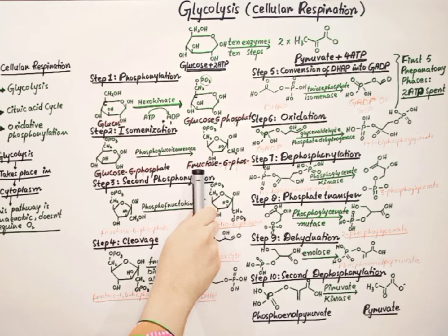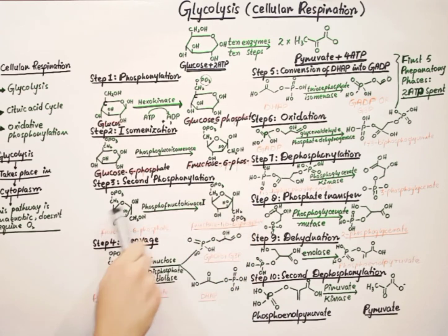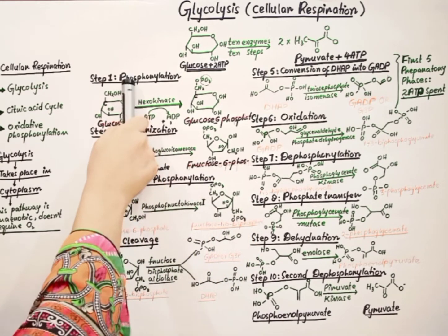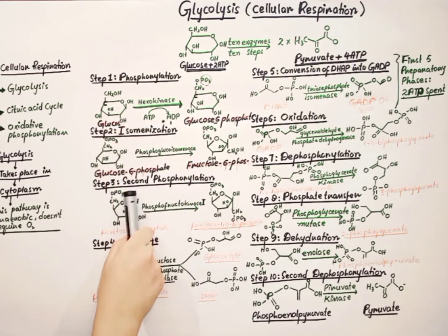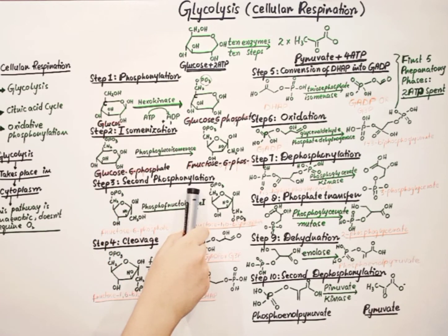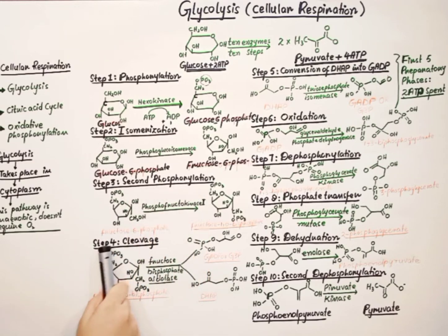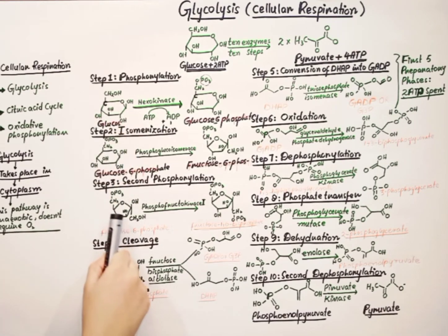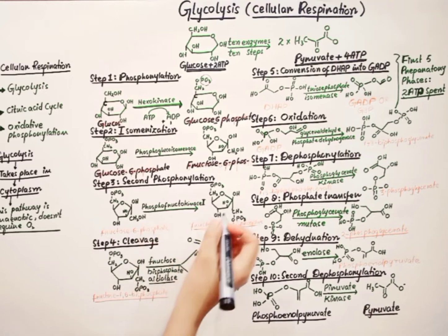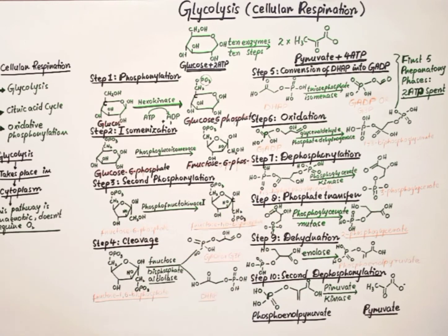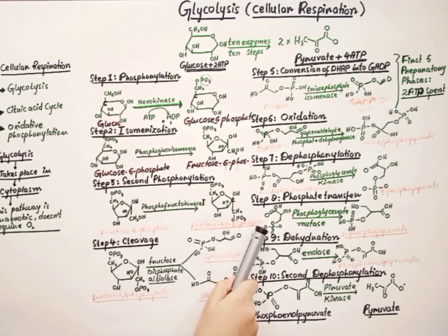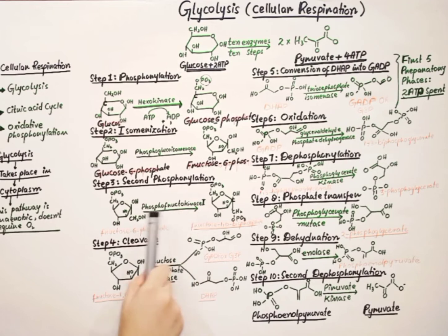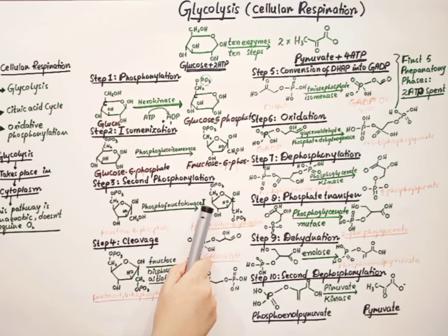After the formation of fructose-6-phosphate, we have a second phosphorylation — this time on carbon number 1. The first phosphorylation took place on carbon-6, while this second phosphorylation occurs on carbon-1. The conversion of fructose-6-phosphate into fructose-1,6-bisphosphate takes place with the help of phosphofructokinase-1 enzyme, and again one ATP molecule is utilized.